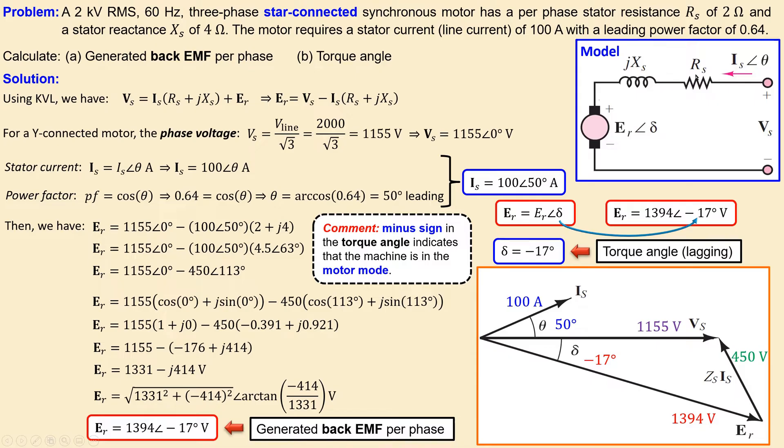The series combination of RS and XS. We now have all of them together: the torque angle and the generated back EMF with its magnitude.